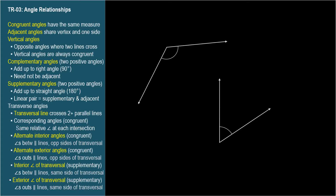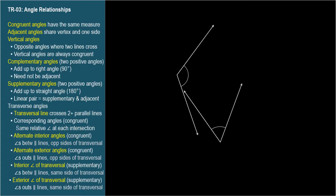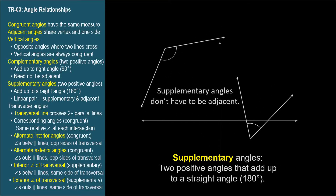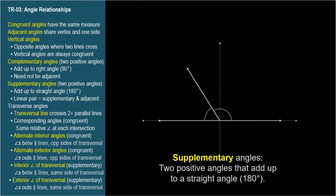Similarly, two positive angles that add up to a straight angle are supplementary angles. But when two supplementary angles are adjacent, they form a linear pair. A linear pair is two adjacent positive angles that are supplementary. Supplementary angles don't have to form a linear pair, but every linear pair consists of supplementary angles.